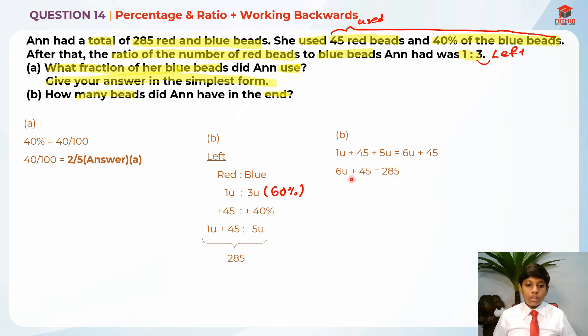We need to use our skills of solving equations by taking 6 units is equal to 285. And then we bring the 45 over to this side. And this plus sign will also change into minus sign. So it becomes minus 45. This is what happened. After that, we know that 6 units is 285 minus 45, which is 240.